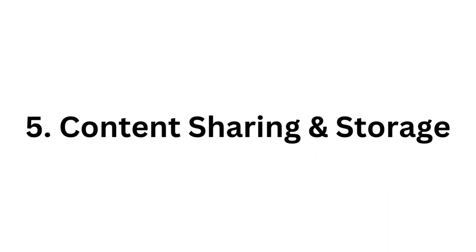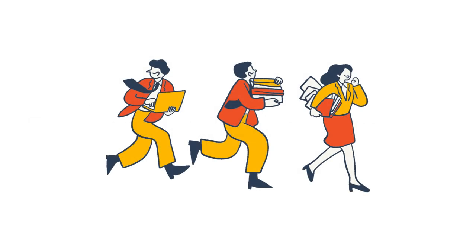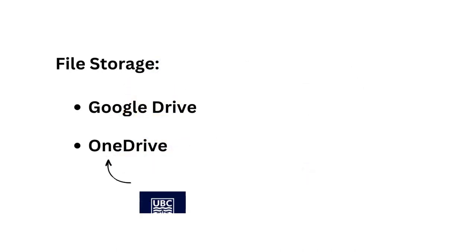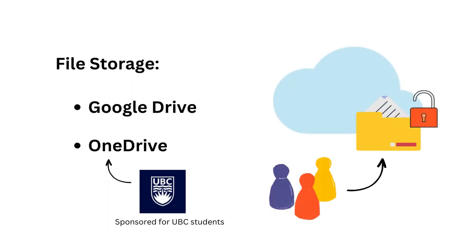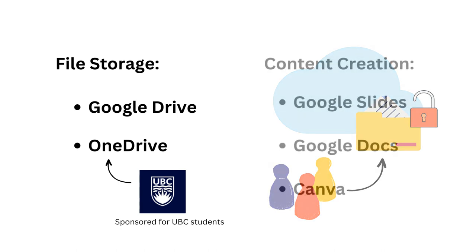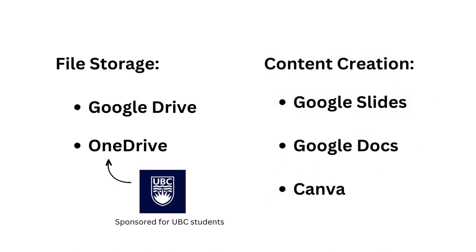Content sharing and storage. Finally, establish where all material will be shared so all group members can access it. On-screen are some platforms that are particularly convenient when working online and sharing content with multiple people. For file storage: Google Drive and OneDrive, which are popular since multiple people can store their work in a central but accessible place. For content creation, we recommend Google Slides, Google Docs, and Canva.